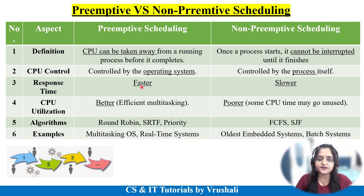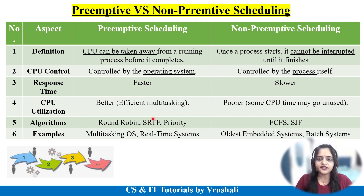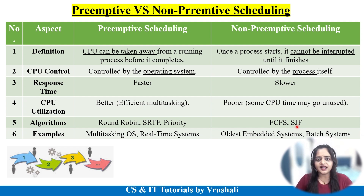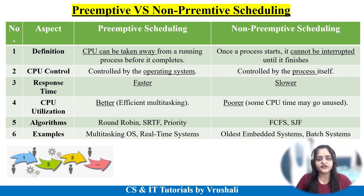Pre-emptive scheduling has faster response time and better CPU utilization compared to non-pre-emptive, because it uses the multitasking environment, whereas non-pre-emptive has poor CPU utilization. Algorithms like Round Robin, SRTF, and Priority support pre-emptive scheduling, while FCFS and SJF support non-pre-emptive scheduling. Real-life examples include multitasking operating systems like Windows and Linux, which support pre-emptive scheduling. Non-pre-emptive scheduling is generally used in older systems like batch operating systems or embedded systems.